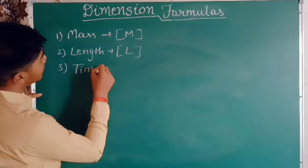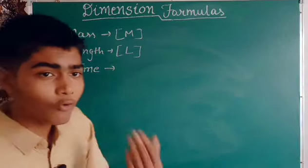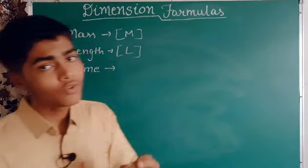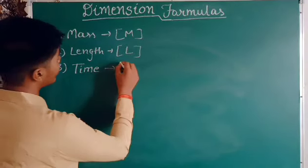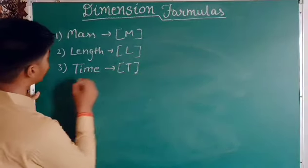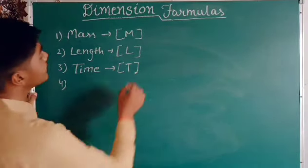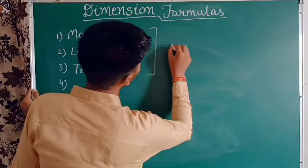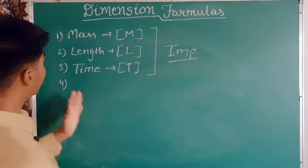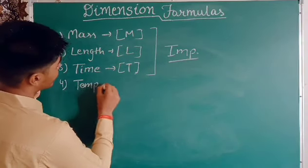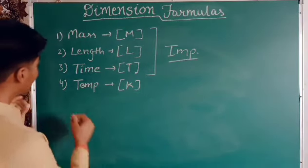The third quantity is time. Time is required for anything — in physics, time will almost always appear in a formula. Time is represented by capital T. These first three quantities — mass, length, and time — are the most important quantities we are going to use in this video.